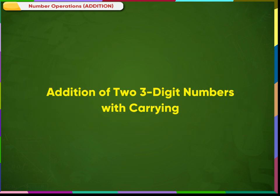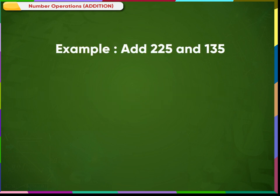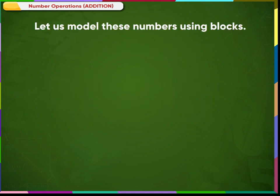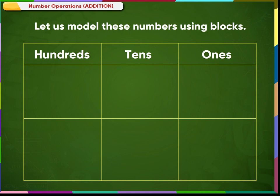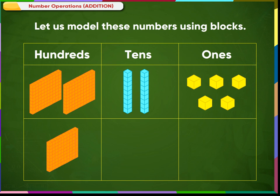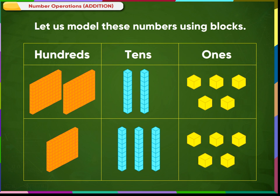Addition of two three-digit numbers with carrying. Example: add 225 and 135. Let us make a place value chart and place the numbers to be added in it. First, the digits in the ones place are added. Let us model these numbers using blocks. 225 means two flats, two rods and five cubes. 135 means one flat, three rods and five cubes.